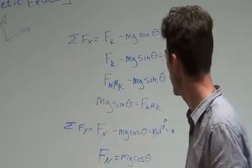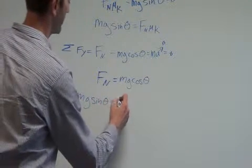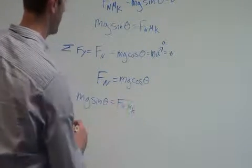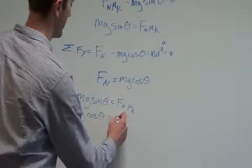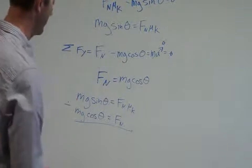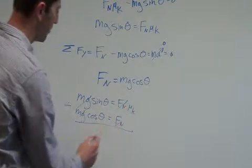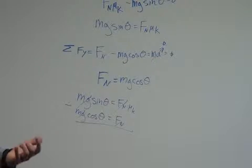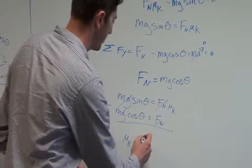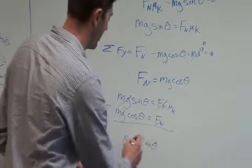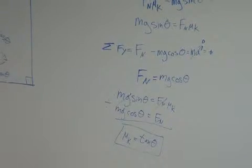Now we just put these two equations together. We'll have mg sine theta equals fn mu sub k, mg cosine theta equals fn. And just divide these two equations. The mg's are going to cancel out. These guys are going to cancel out. Fn's going to cancel out. We'll be left with sine theta over cosine theta. Sine over cosine is tan, tangent. So we say that mu sub k equals tan theta. This looks exactly like our last problem. We said that mu sub s would be equal to tan theta.